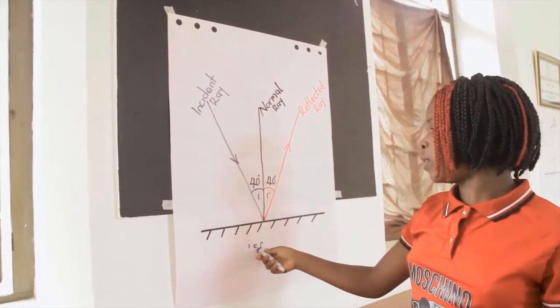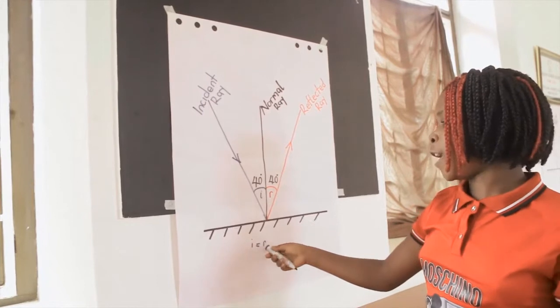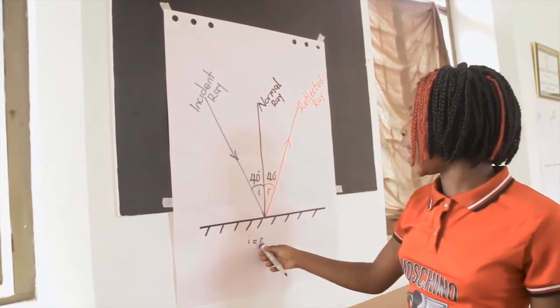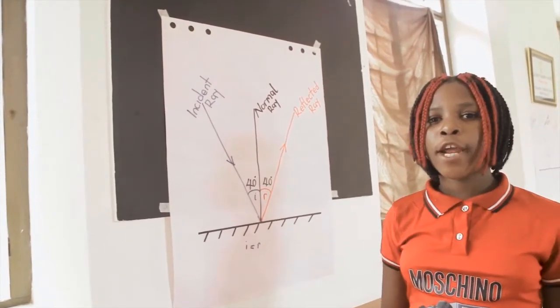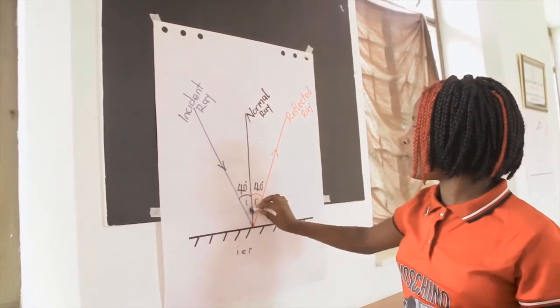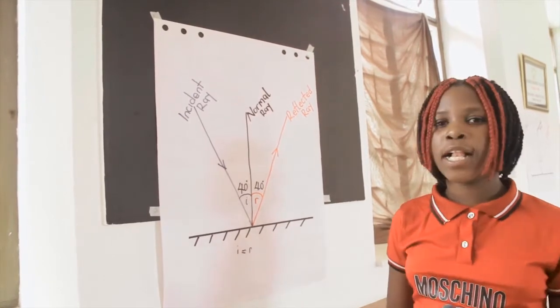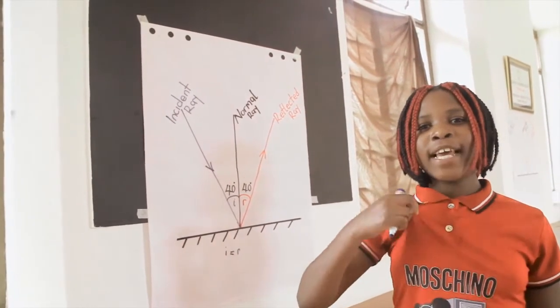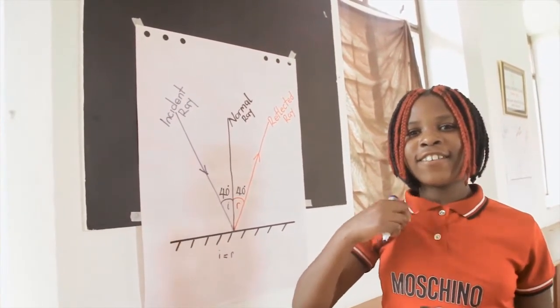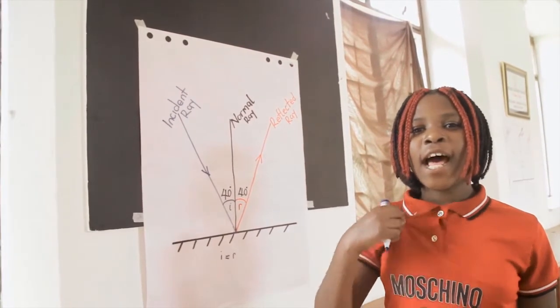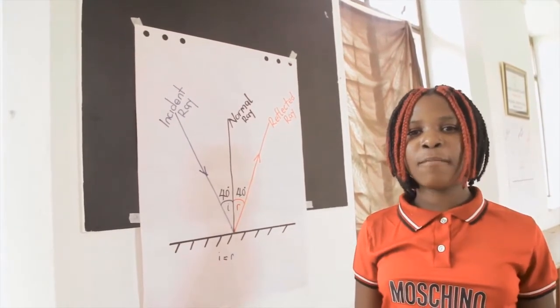The angle of incidence equals the angle of reflection. This is one of the laws. A ray traveling along the normal is reflected back along itself. An object is red because it reflects red and absorbs colors green and blue.